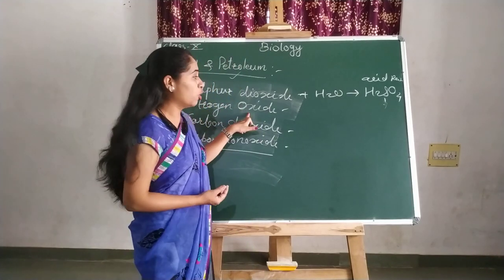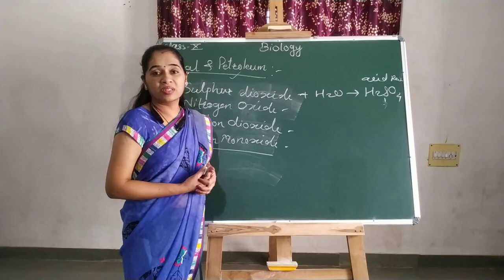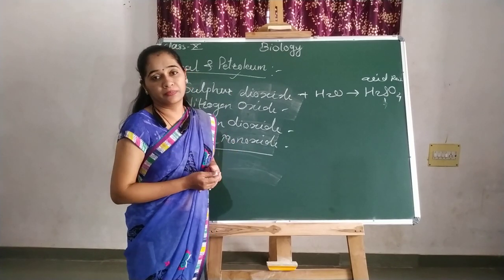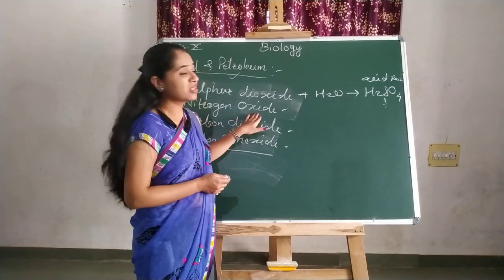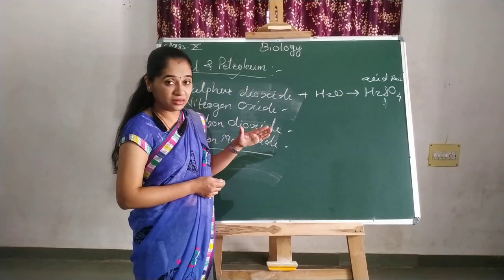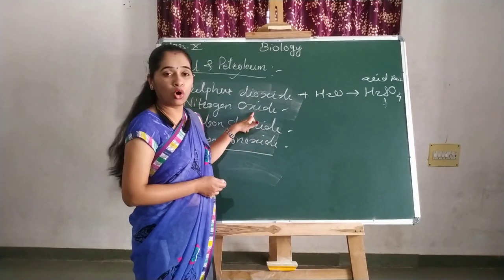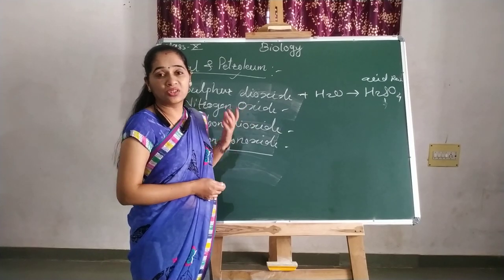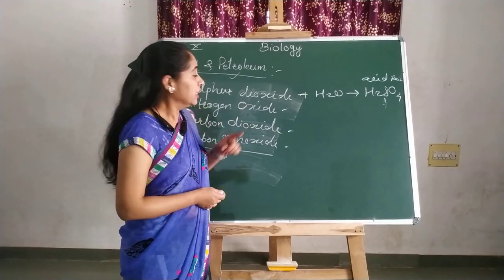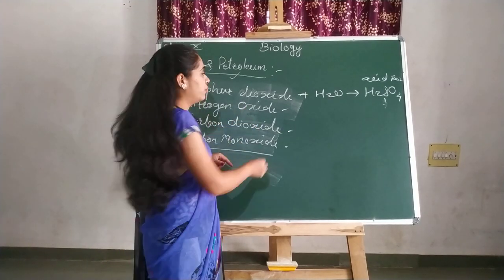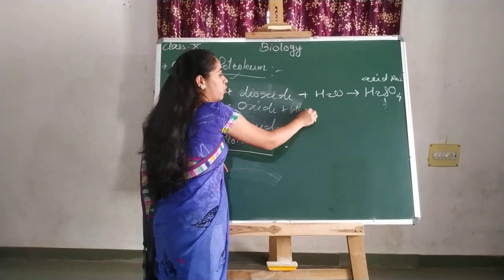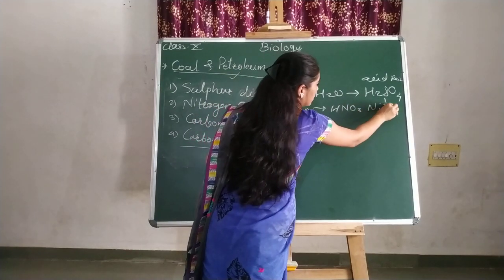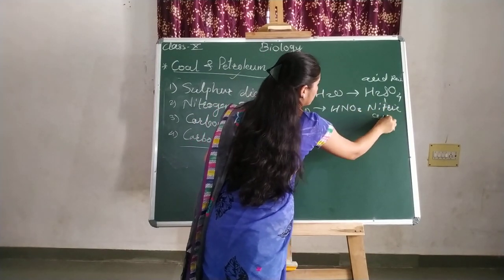Similarly, nitrogen oxide is also released through the combustion of coal and petroleum. It is one of the most harmful gases as far as the respiratory system is concerned. It can also cause burning and itching sensation in the eyes, and in many people it may cause a disorder of vision. These gases also react with water to produce nitric acid.